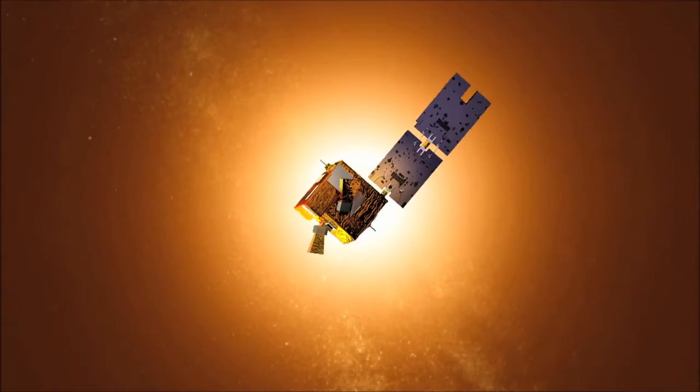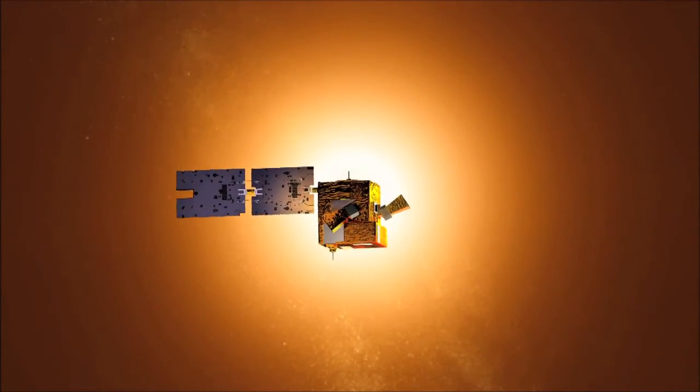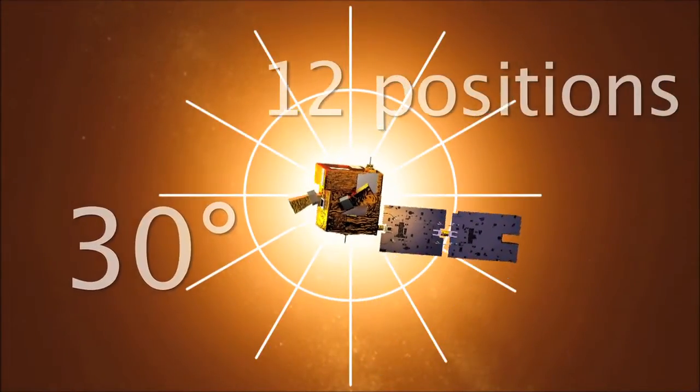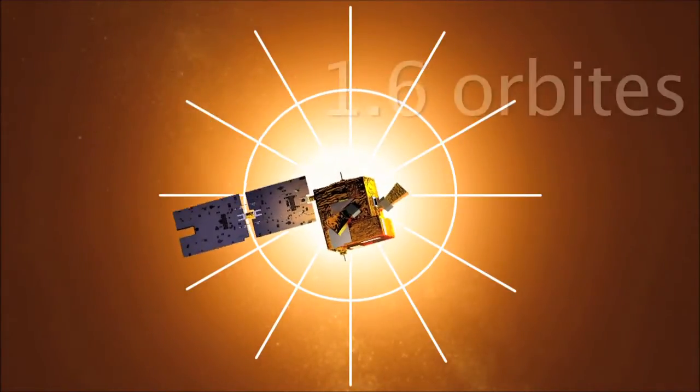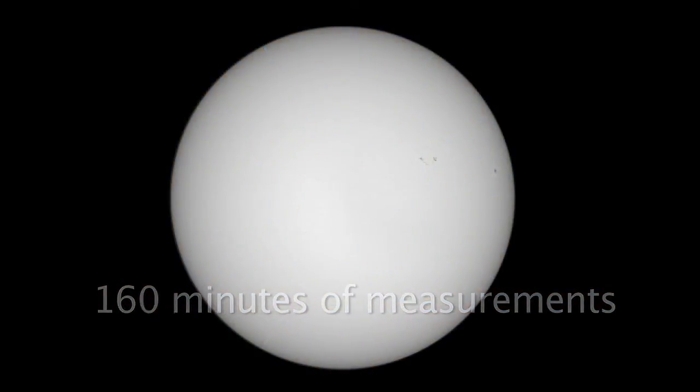The MDO mode enables to obtain the solar oblateness and the optical distortion of the telescope. This mode consists in making the acquisition of 80 images per angular position of the satellite. The satellite rotates on its axis by steps of 30 degrees, so in total 12 positions. For one rotation of the satellite, the duration of the measures is of 1.6 orbits, so in total 160 minutes of measurements.